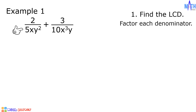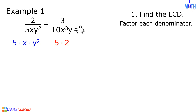In 5xy squared, since 5 is a prime number, let us rewrite 5xy squared as 5 times x times y squared. In 10x cubed y, factors of 10 are 5 and 2, so we have 5 times 2 times x cubed times y.